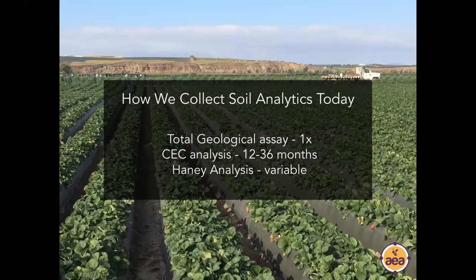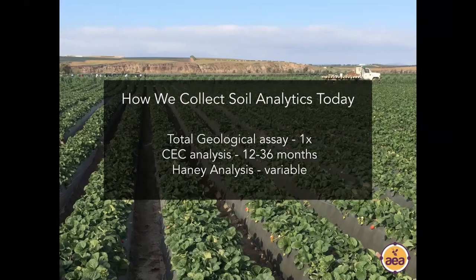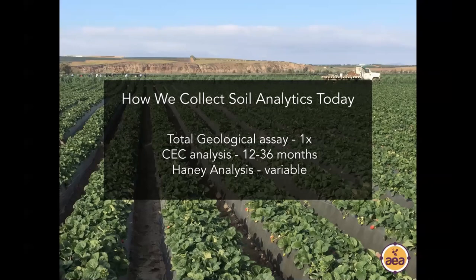We take the geological sample only once per soil type. We pull the CEC analysis once a year for high-value fruit and vegetable crops, and once every 36 months for broadacre crops. The additional test we pull is the Haney analysis. We've only been using the Haney analysis for the last two years, and what has become obvious is that the Haney analysis correlates with actual measured plant nutrient absorption as reported on a sap analysis much more closely than the CEC analysis does — and also correlates with crop response in the field much more closely.